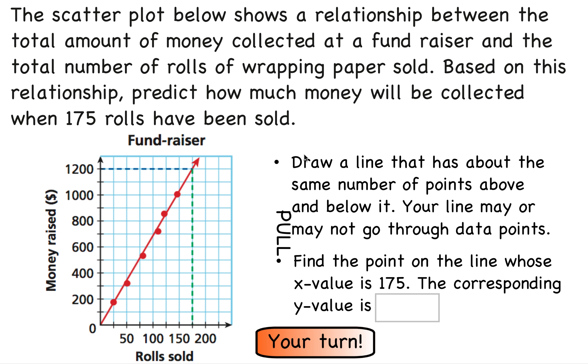So once we have the trend line, we want to find the point 175 rolls. So find the point on the line where the x value is 175, and that's this dotted green line. So we follow that all the way up to our graph and then follow it to the left, and it says that the output for that input value is about 1,200.